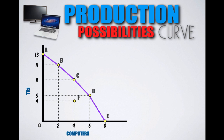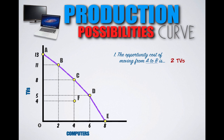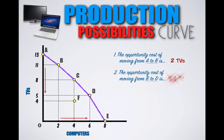We can also use production possibilities curves to calculate opportunity cost. Moving from Point A to Point B, Country B reduces TV production from 13 to 11 TVs, freeing resources to boost computer production from zero to two computers. The opportunity cost of shifting from Combination A to B is two TVs. Moving from Point B to Point D, TV production falls from 11 to 5, while computer production rises from two to six. The opportunity cost of moving from Combination B to D is six TVs.